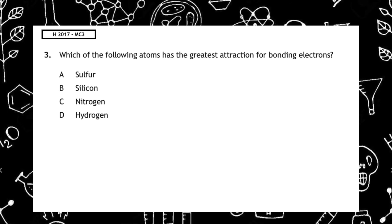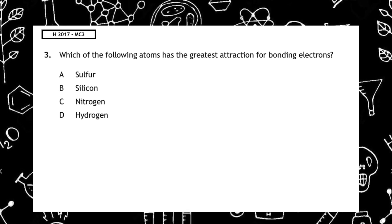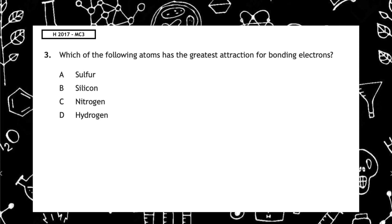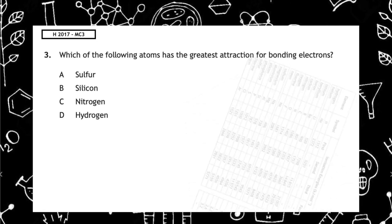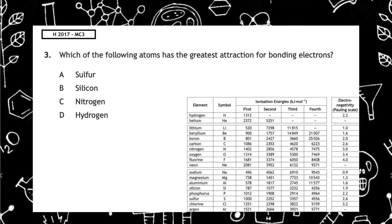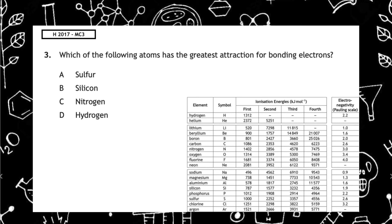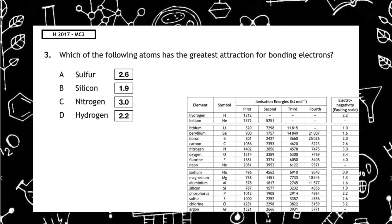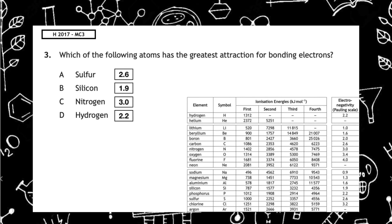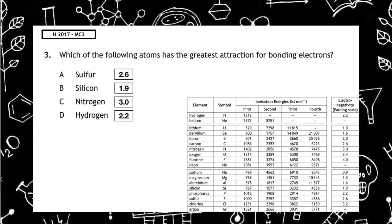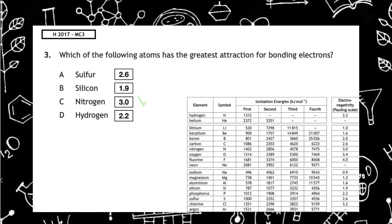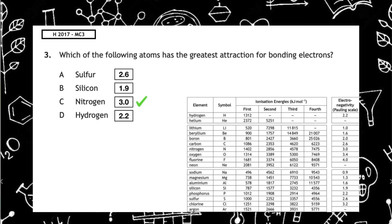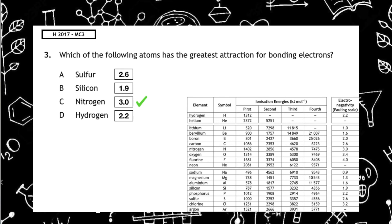This past paper question is from the Higher 2017 multiple choice 3. Which of the following atoms has the greatest attraction for bonding electrons? Using page 12 of the updated data booklet, we want to select the electronegativity values for each of the elements. As electronegativity is the pull an atom has for bonding electrons, we can see that the one which has the biggest attraction is nitrogen. So the correct answer is multiple choice answer C.